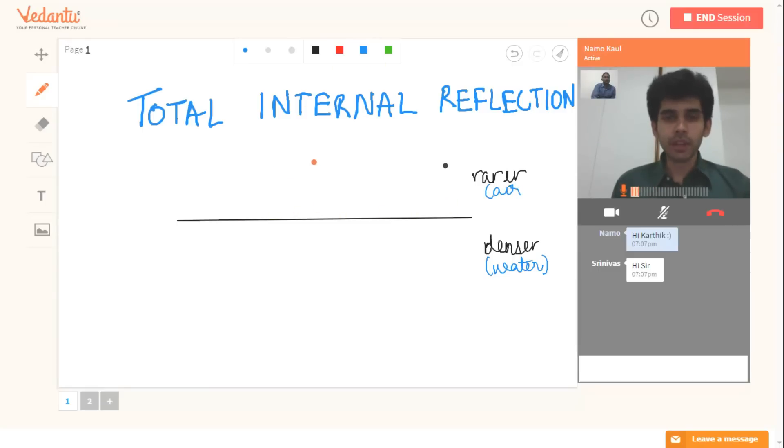So let me draw a normal where we will incident a ray. So this is the normal. This is the point of incidence. So at this point of incidence, if I incident a ray at a very small angle, can you retrace the refracted ray? So the ray will be going something like this, away from the normal, right? Perfect.